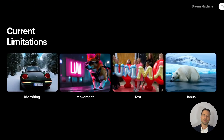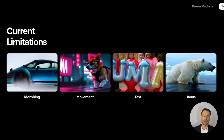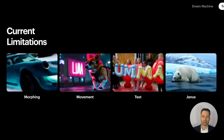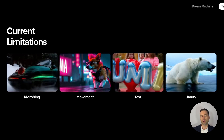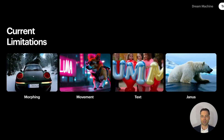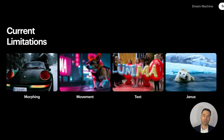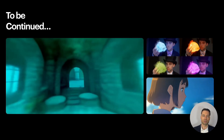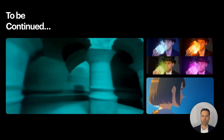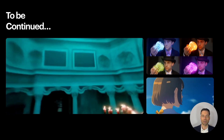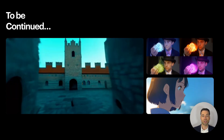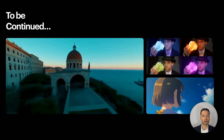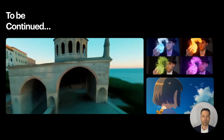There are some limitations that Dream Machine calls out, such as morphing, some movement clipping, the text is not quite right yet, and for now videos are only up to five seconds. But the difference between video services like Sora or Kling is that with Dream Machine you can use it right now — you can actually create these videos right now, and we're going to do that together.